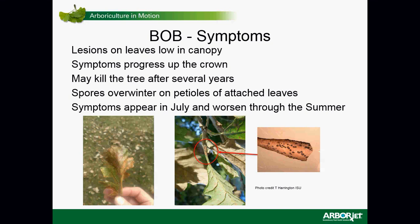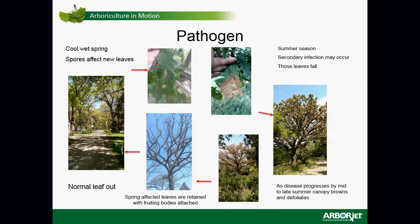Spring-affected leaves are more likely to stay on the tree, and if they stay, the fruiting bodies stay with them. If you don't have a particularly cool, wet spring, the disease can still develop later in the summer. Leaf spots may develop during June into July if conditions are right. Those summer-affected leaves usually turn brown and fall off the tree, so you can have defoliation from that second phase. Generally, spring-affected leaves are retained on the tree while summer-affected leaves may fall off.